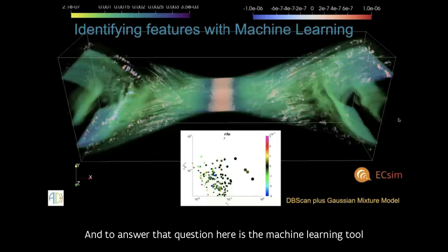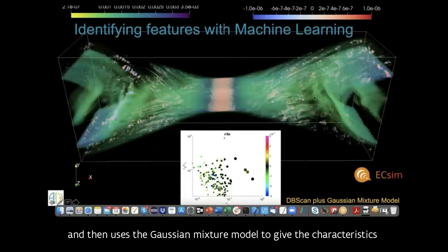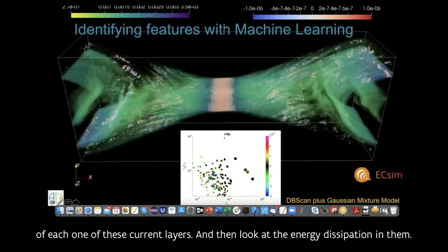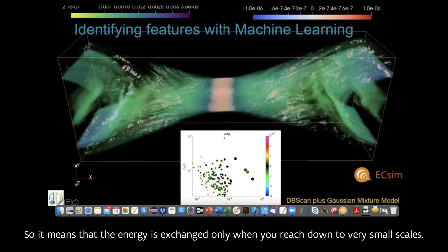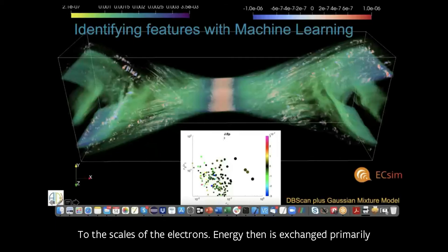This simulation produces very large amounts of data. For example, in this case is the simulation that I just showed you. This simulation has currents within them and we need to know where is the energy going. And to answer that question, here is the machine learning tool that selects the regions with the highest currents using DBSCAN and then uses the Gaussian mixture model to identify, to give the characteristics of each one of these current layers and then look at the energy dissipation in them. And as you see, if you do that, you realize that only the smallest structures have the highest energy exchange. So it means that the energy is exchanged only when you reach down to very small scales, to the scales of the electrons. Energy then is exchanged primarily by the electrons that are the main actor in this case.